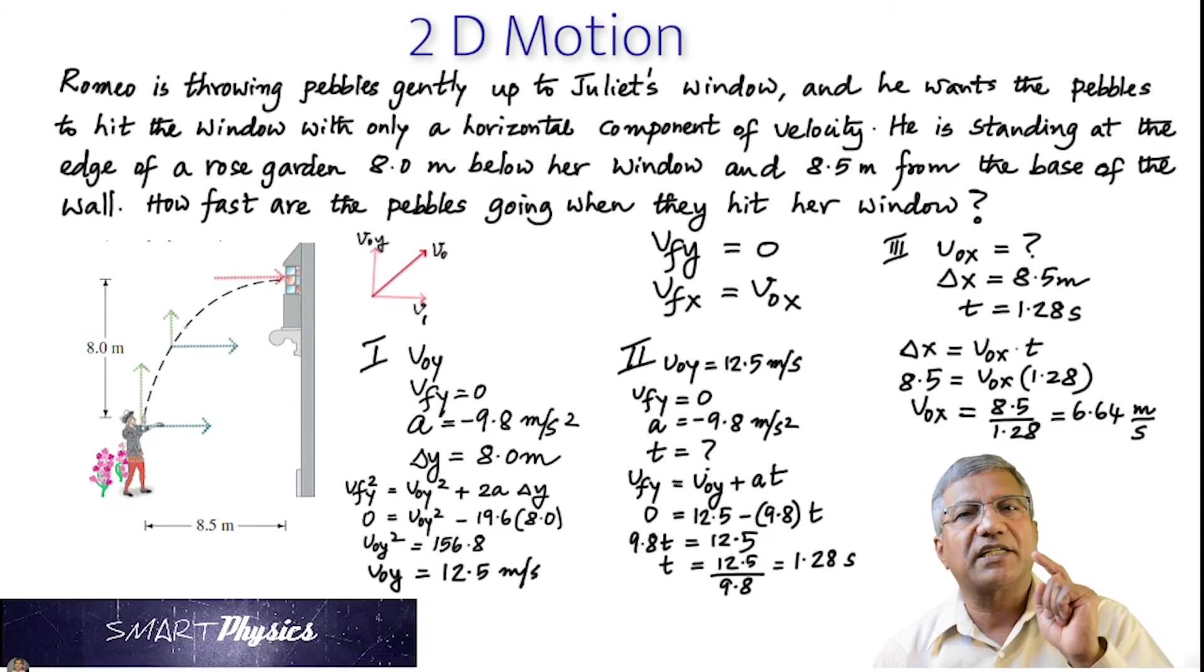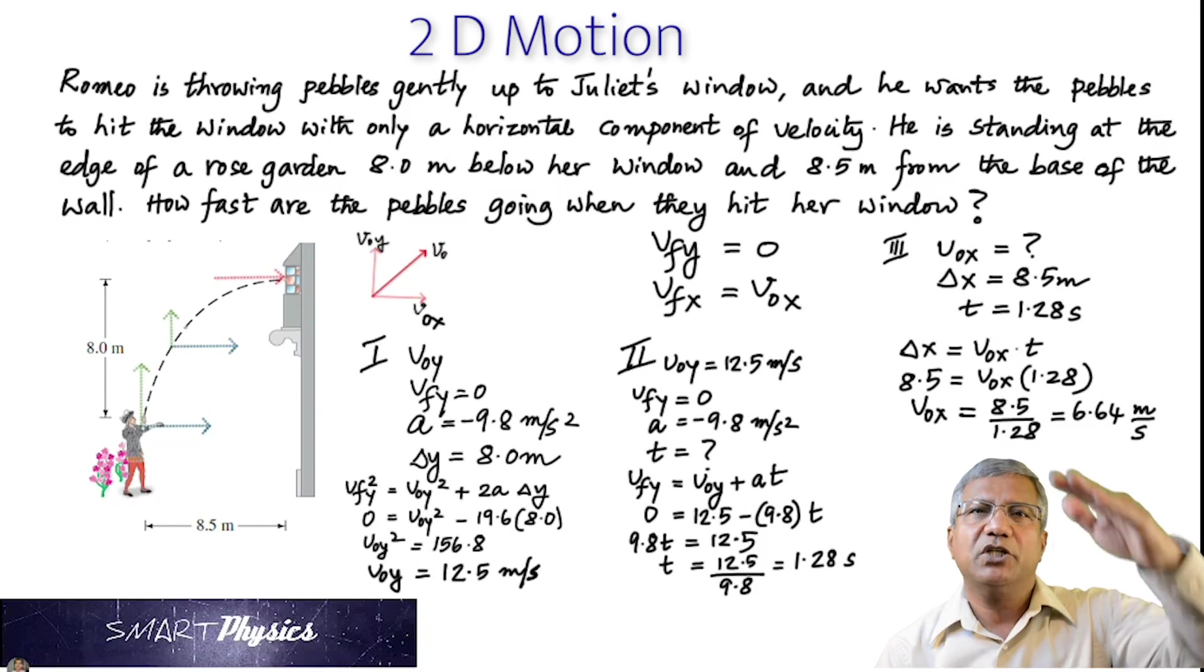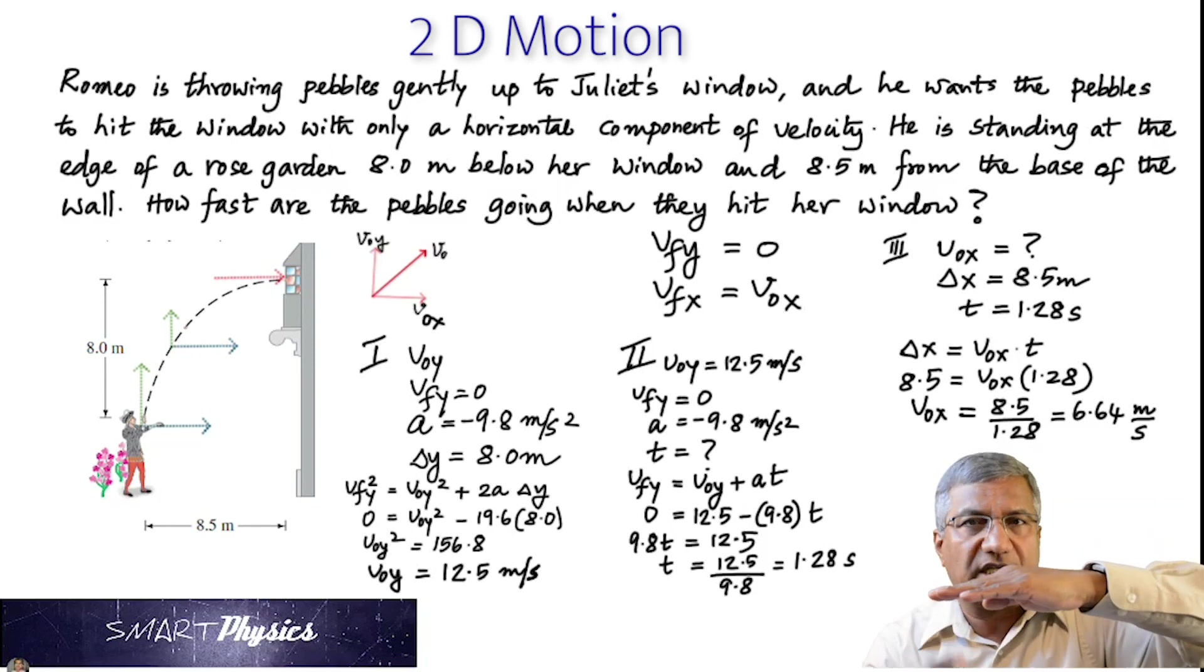But that's also the final X velocity. You know why? Because the X velocity never changes. You got it. So that's the answer to the question. That's the velocity with which the pebble hits the window because it says it has to hit it horizontally.